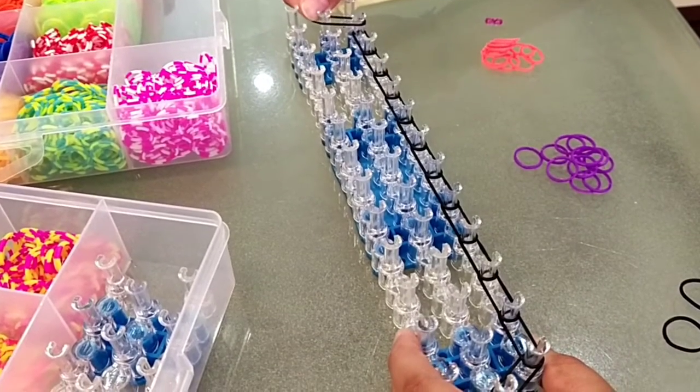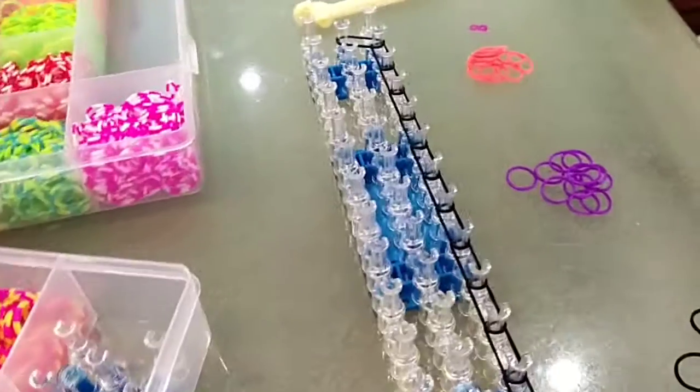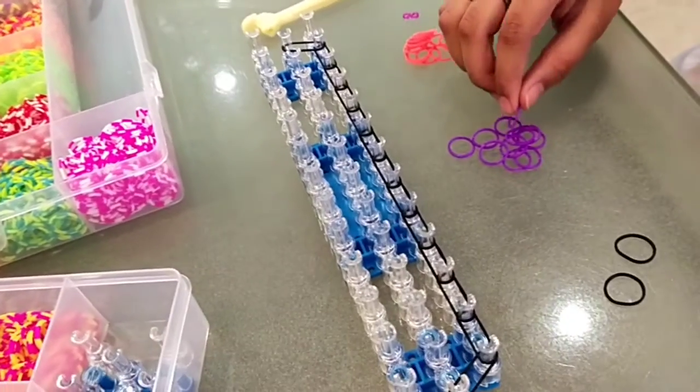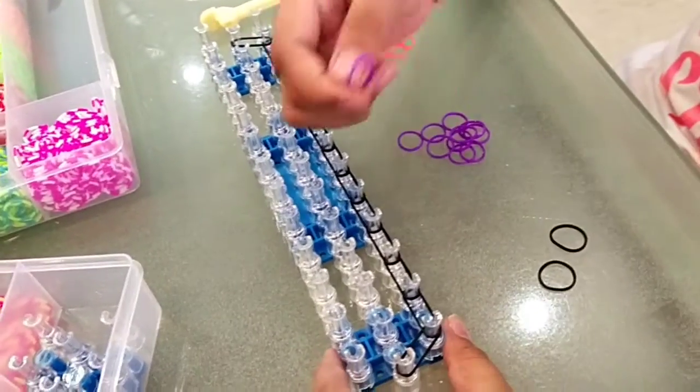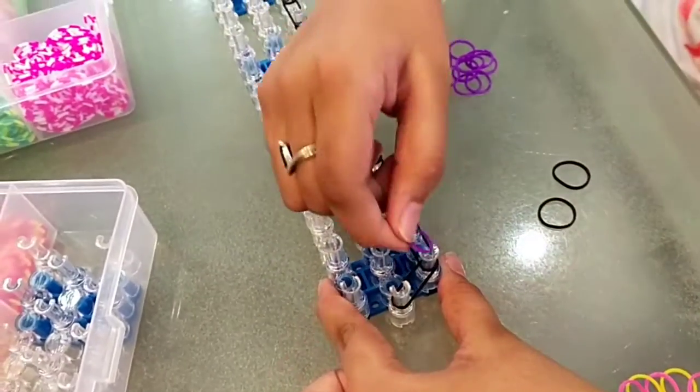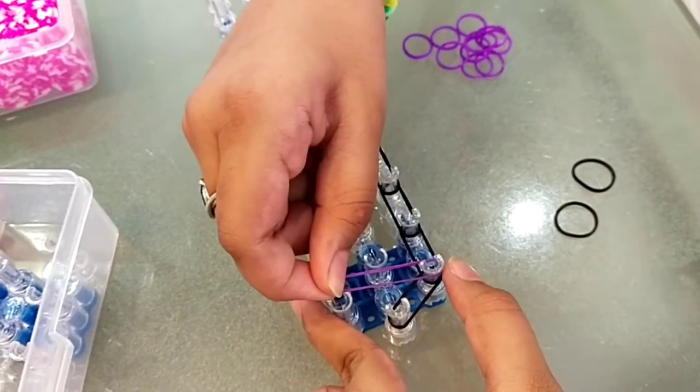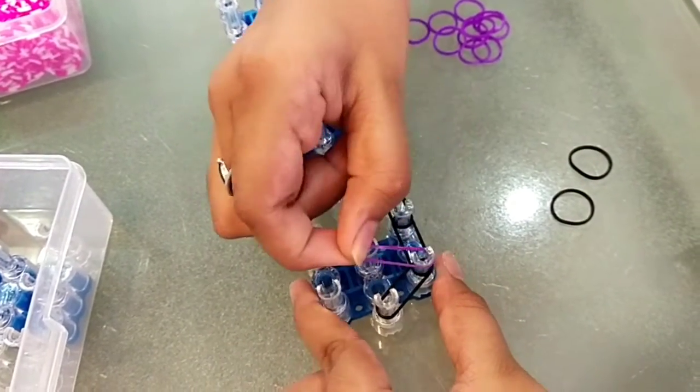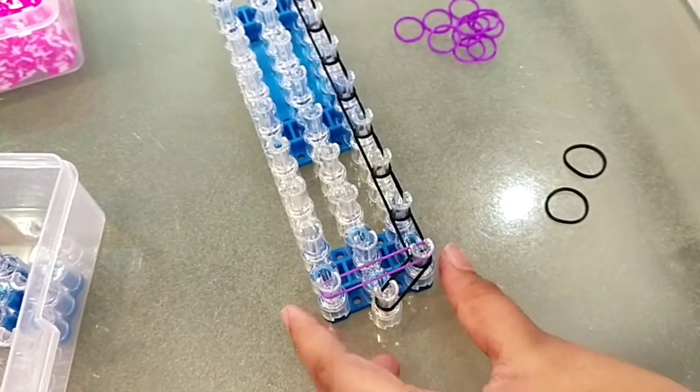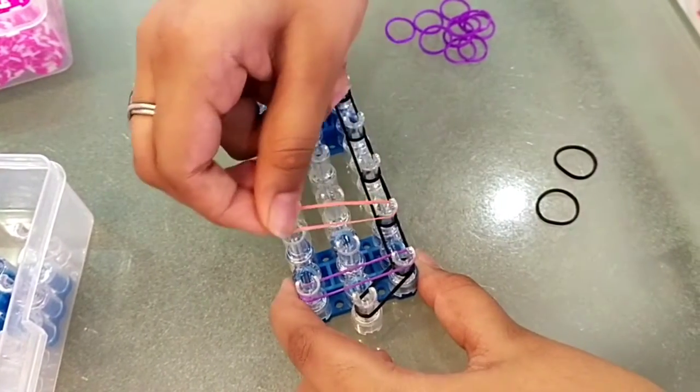And it goes sideways from here to here. Now we need to place our pattern and my pattern is going to start with purple. Take your first color from here to here, your next color from here to here.